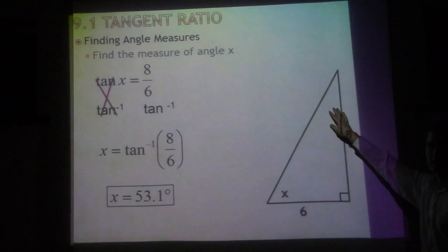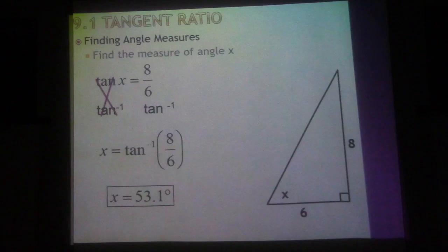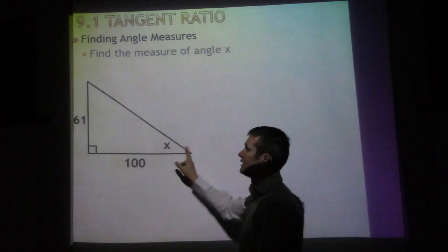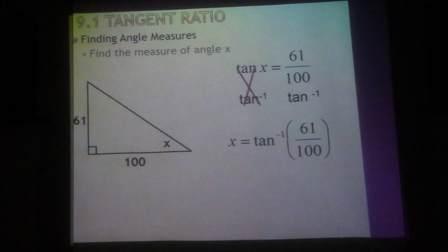We can get an idea about what this angle is—about 36.9 or about 37°, which makes sense. This angle is smaller, this side is shorter. That's the other way you can always check. Same thing: tangent of angle X equals 61 over 100. To get rid of tangent, we do the inverse. X equals tangent inverse of 61 over 100. Plug that into your calculator and solve.